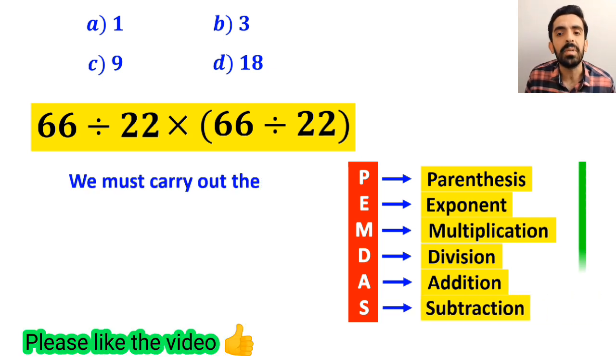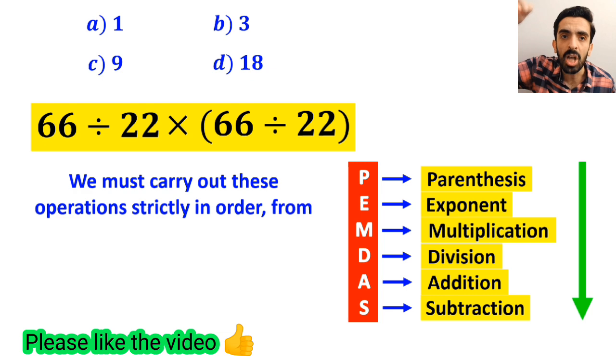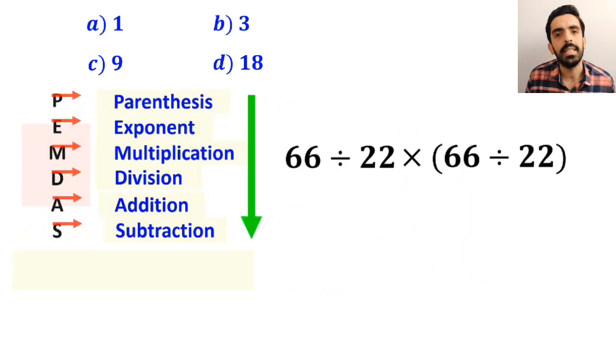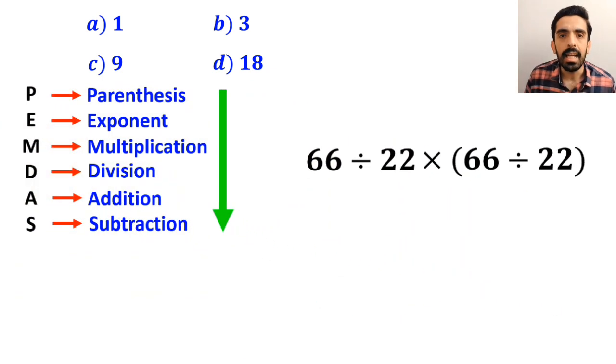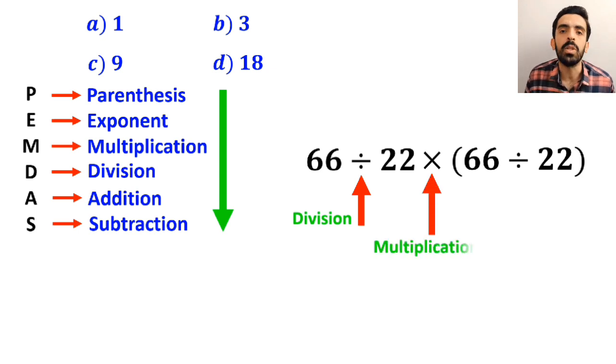We must carry out these operations strictly in order from top to bottom. As you can see on the screen in this expression, first we have a division sign, then a multiplication sign, and finally parentheses.